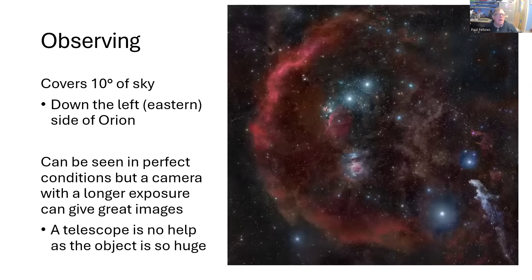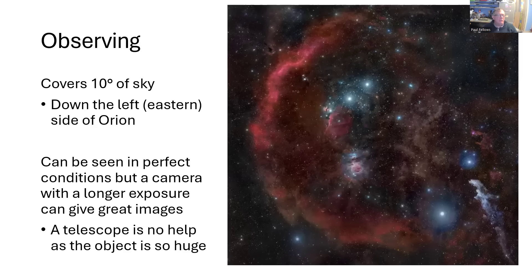So looking at it, it's huge, covering 10 degrees of sky all the way down the left-hand side of Orion. You can see it in perfect conditions. Clearly Barnard was able to spot it. But a camera with a long exposure is really what you need. A telescope will be no help at all, because a telescope will have such a tiny field of view that you just won't be able to tell what you're looking at.